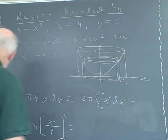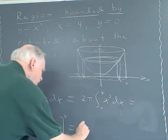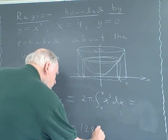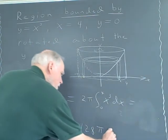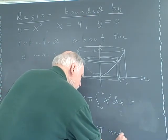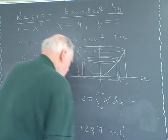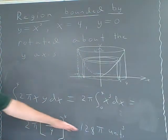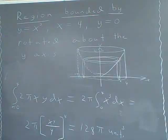And that comes out to be 128 pi units squared. Cube, excuse me, cubic units. It's a solid, isn't it? So it comes out to 128 pi units cubed. And I think everyone knows how to evaluate that. So that's what I did. That's what I got for an answer.